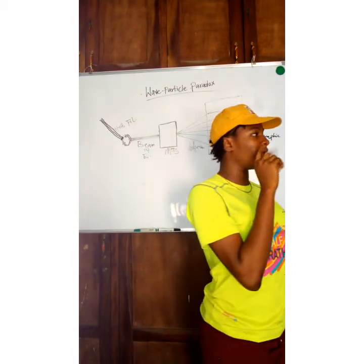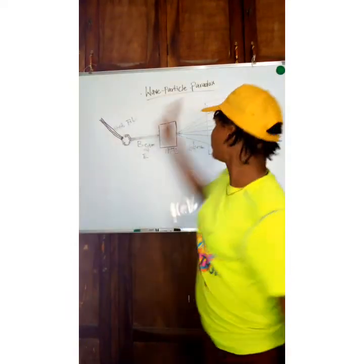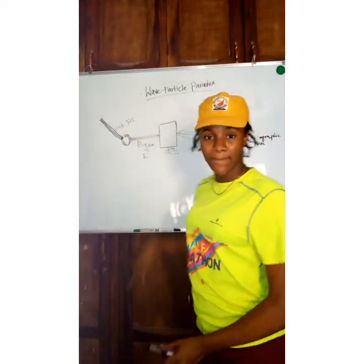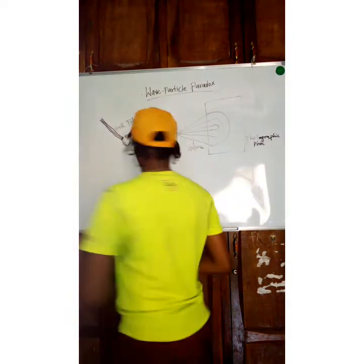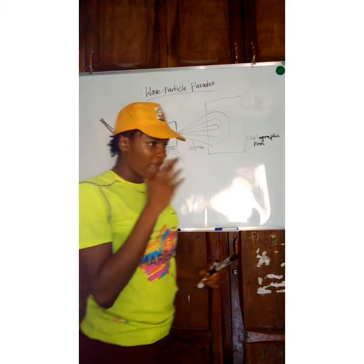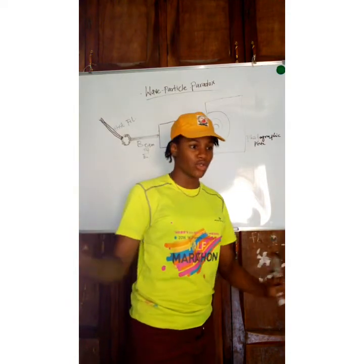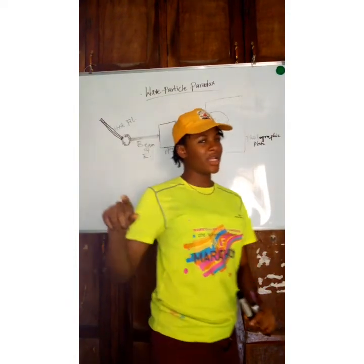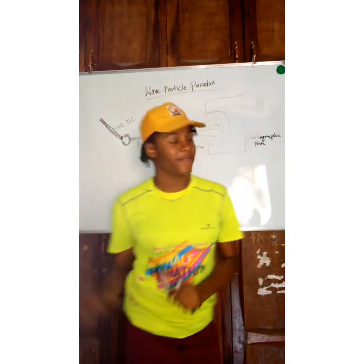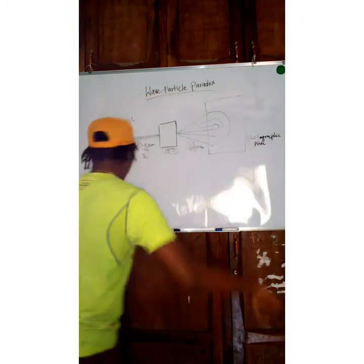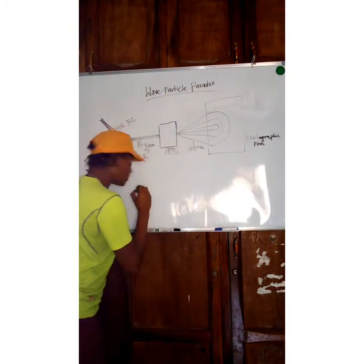There are two effects that talk about the particle nature of light and matter. One is the photoelectric effect, and another is the Compton effect. The Compton effect describes when a Compton photon is moving and collides with a free electron — that electron will recoil in a perfectly elastic collision. Let me give it in a diagram.